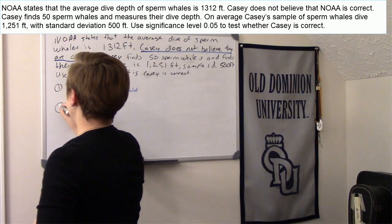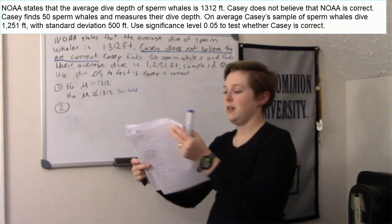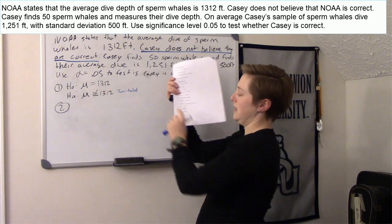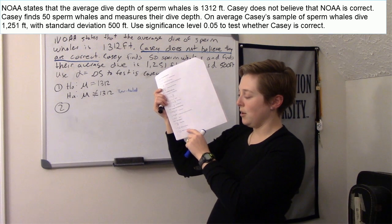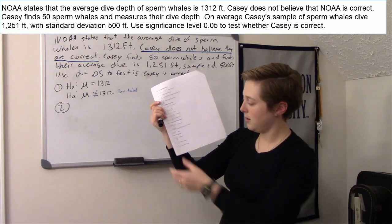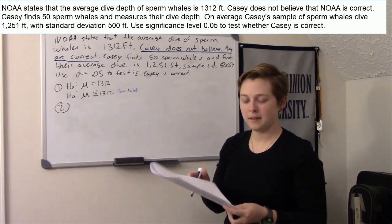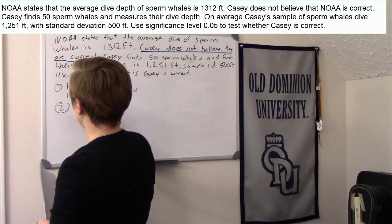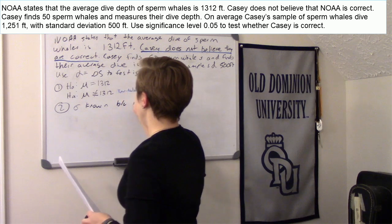Step two is to calculate our test statistic. We go to our formula sheet under the test statistics section. We're testing the mean — the average dive for the sperm whale — not a proportion. For sigma known versus sigma unknown: because our sample size n equals 50, which is greater than 30, we can assume the sample standard deviation approximates sigma, so we use sigma known.